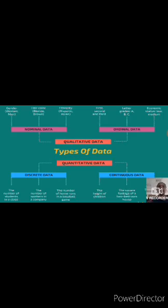What is nominal data? Some examples: gender - women or men; hair color - blonde or brown. Likewise, ordinal data: first and second, letter grades A, B, C, economic status - low or medium. These are all examples of nominal data and ordinal data.